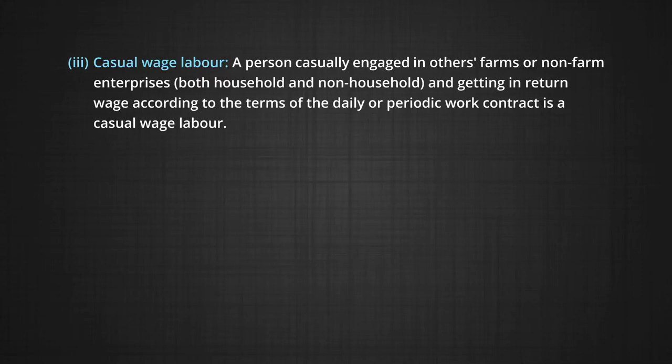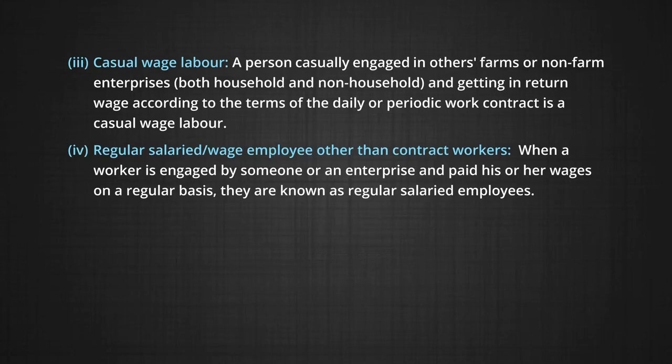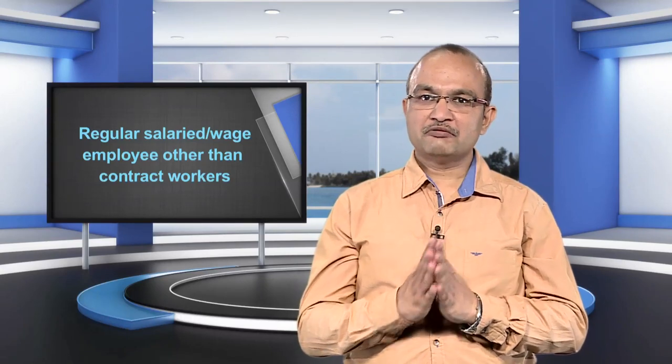Casual wage labor refers to a person casually engaged in other farm or non-farm enterprises, including the household as well as non-household sector, and getting in return wages according to the terms of a daily or periodic work contract. An example of a casual worker is a construction worker. Construction workers account for 30 percent of India's workforce. Regular salaried or wage employees are workers engaged by someone or an enterprise and paid wages on a regular basis. An example of a regular salaried worker is a civil engineer working in a construction company.